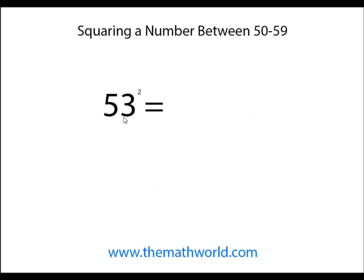The next example is 53 squared. We take this ones digit and square it. So 3 times 3. We put 09—again, it needs to be two digits. And then 25 plus the ones digit, so 25 plus 3 is 28. Our answer is 2,809.